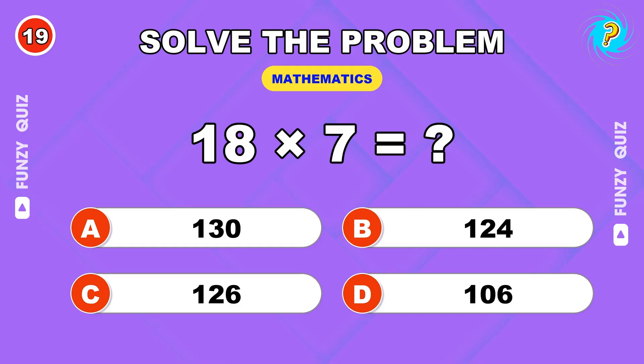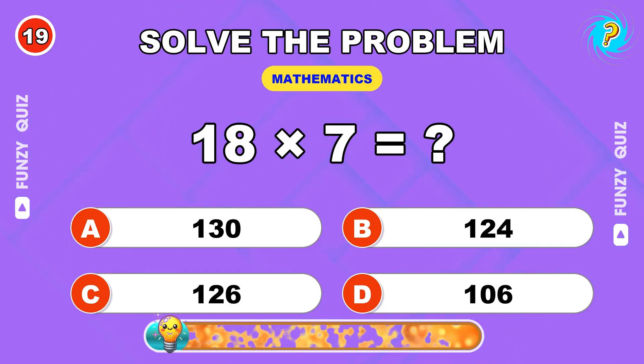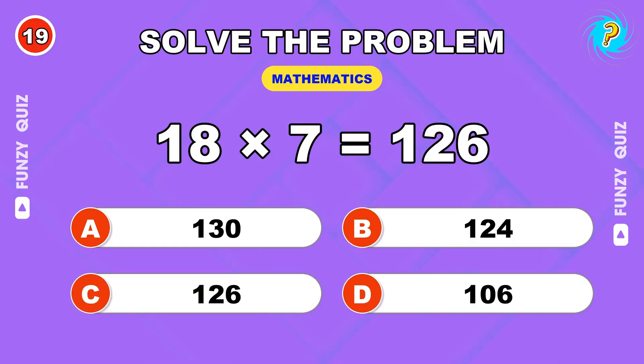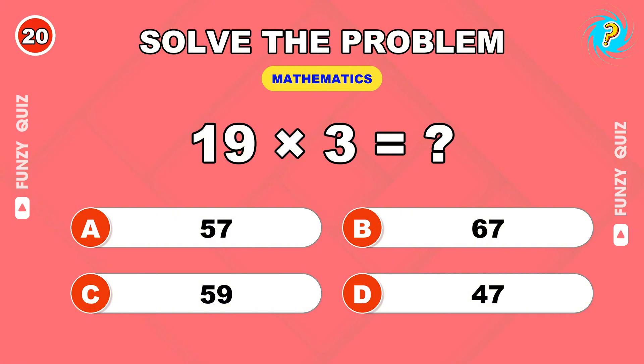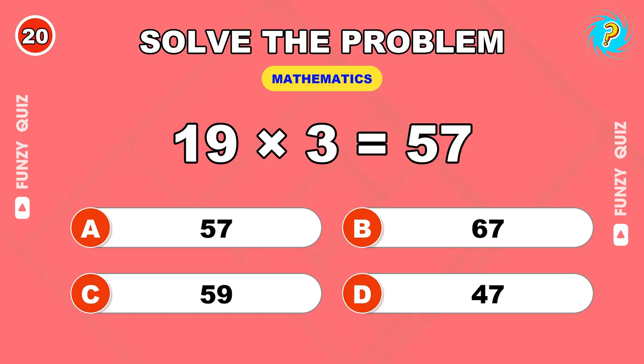Bring it on. 18 times 7? 126. You got this. 19 times 3? 57.